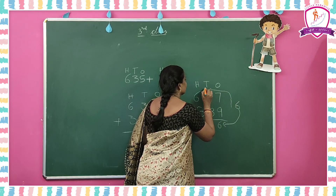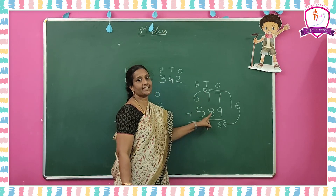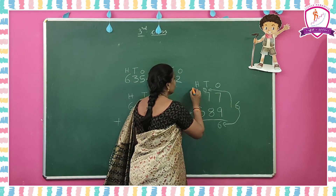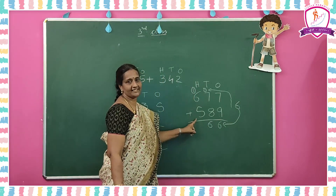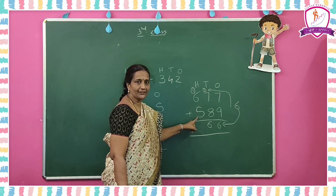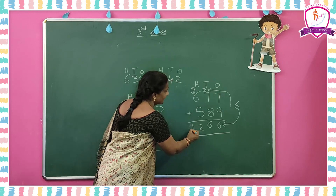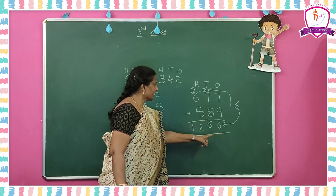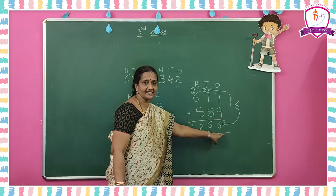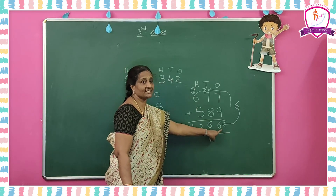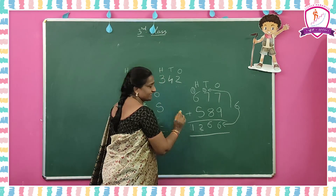Now add the tens place: carry 1 plus 7 is 8, and 8 plus 8 — two eights — is 16. Again we got 16. Take 1 as carry forward to the hundreds place and 6 in tens place. Now add hundreds place: 1 plus 6 is 7, and 7 plus 5 is 12. In 12, write 2 in hundreds place and 1 in thousands place because we got a 4-digit number. The answer is 1 thousand, 2 hundred, 6 tens, 6 ones — one thousand two hundred and sixty-six.